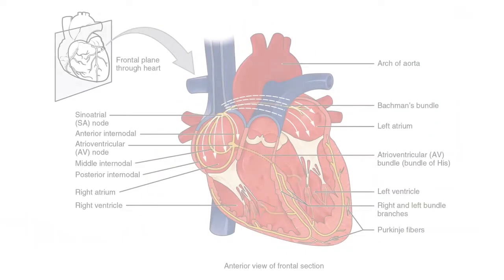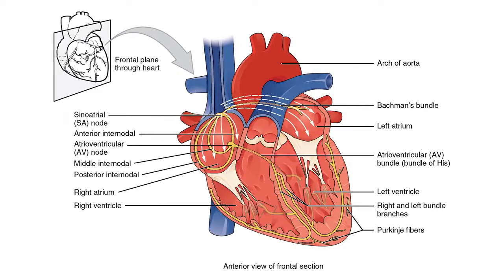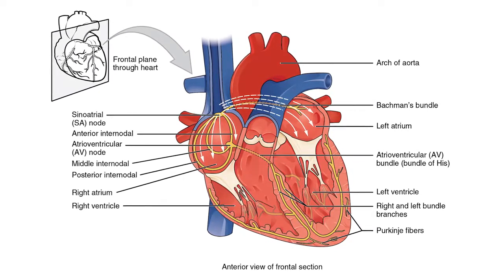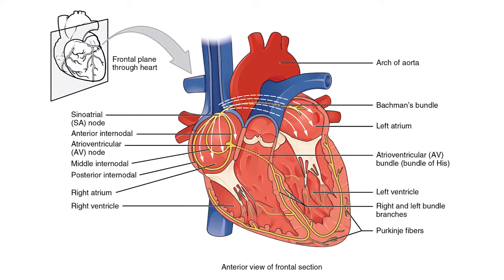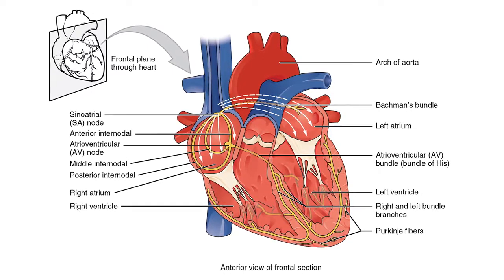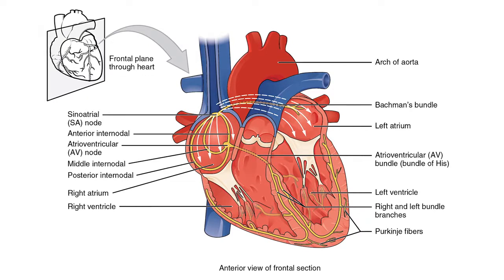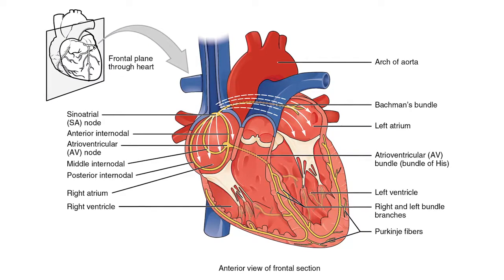Here are some important points to remember. The SA or sinoatrial node is the pacemaker of the heart. It initiates atrial contraction or depolarization, causes a stimulus 60 to 100 times per minute, and is represented by the P wave on the EKG.